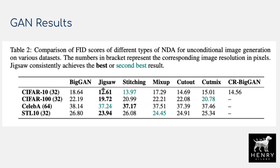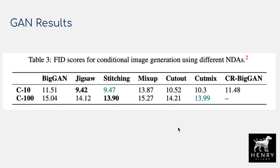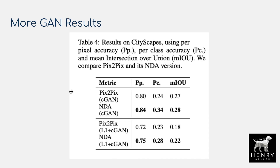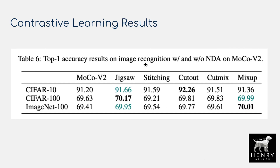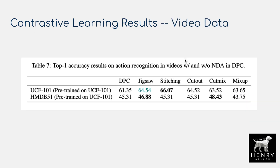More results show jigsaw improves on the BigGAN baseline and outperforms stitching, mixup, cutout, and CutMix augmentations. Additional results cover conditional image generation — where class labels are included, as in conditional versus unconditional GANs — and image-to-image translation with the pix2pix conditional GAN architecture. For contrastive learning, jigsaw builds on the baseline and outperforms other augmentations like stitching. Cutout also shows good performance since its randomly cropped zero-patches are out of distribution for normal images. Results on video data are also presented.